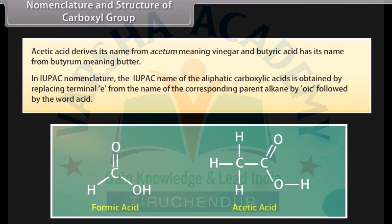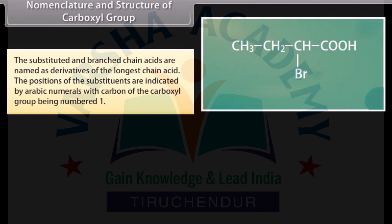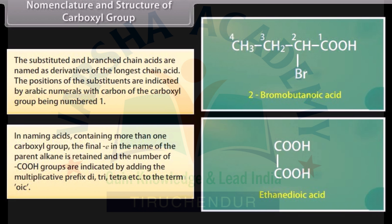In IUPAC nomenclature, the IUPAC name of aliphatic carboxylic acids is obtained by replacing the terminal 'e' from the name of the corresponding parent alkane by 'oic', followed by the word acid. Substituted and branched chain acids are named as derivatives of the longest chain acid. The positions of substituents are indicated by Arabic numerals, with the carbon of the carboxyl group being number 1. In naming acids containing more than one carboxyl group, the final 'e' in the name of the parent alkane is retained and the number of carboxyl groups are indicated by adding the multiplicative prefixes di-, tri-, tetra-, etc., to the term 'oic'.